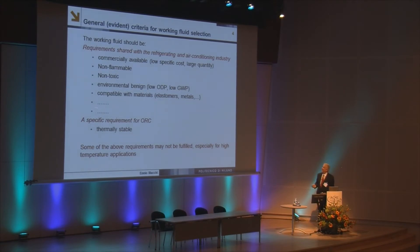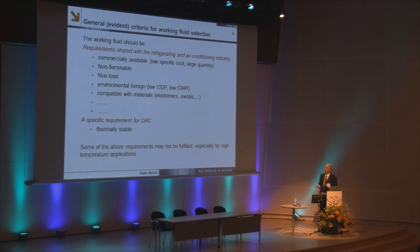Some general, evident criteria for working fluid selection are listed. They are similar to the requirements for the refrigerating and air conditioning industry, and they are not so easy to match. For instance, when we started thinking about organic Rankine cycles, ozone depletion potential and global warming potential were not important issues, but now they are becoming important.